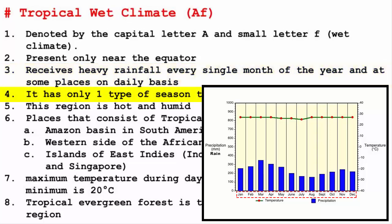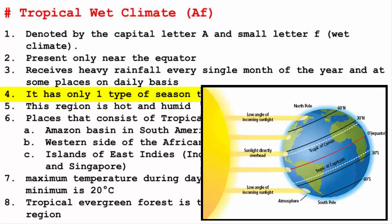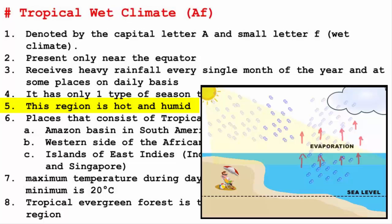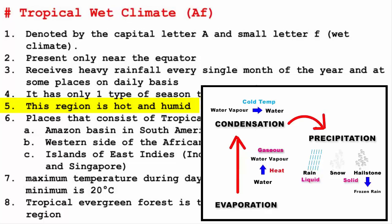Seasons don't change in tropical wet climate, so there's only one season. The reason why it rains so much here is because of the regular warm temperature. Warm temperature is the reason behind evaporation, and that is what keeps the humidity high. After evaporation, it's condensation time, which means rainfall has to occur.